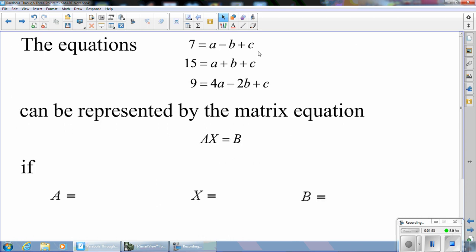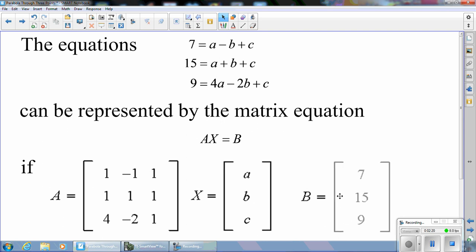The equations 7 equal a minus b plus c, 15 equal a plus b plus c, and 9 equal 4a minus 2b plus c, can be represented by the matrix equation AX equals B. If A is the coefficient matrix, X is the variable matrix, and B is the constant matrix.